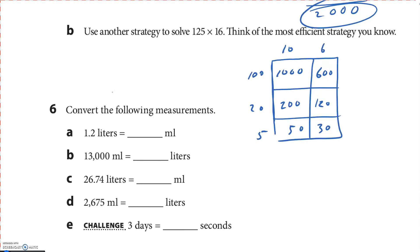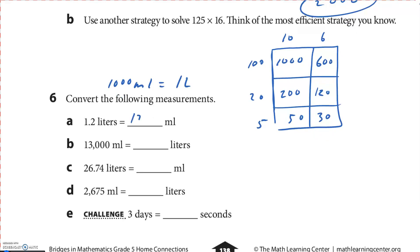You just need to know there's 1,000 milliliters in 1 liter. Okay? So if I go 1.2 times 1,000, it's 1,000, and then it becomes 1,200 milliliters. Now if I divide 13,000 by 1,000, divide by 1,000, it becomes 13 liters. Alright? Now if I multiply this one, I'm running out of time, so I'm just going to give you answers. If I multiply this by 1,000, it's going to be 2, 6, 7, 4, 0. 26,740. And the last one, well the second last one, is 2.675. And I'm not going to have time for the challenge. Okay?